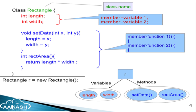How do we create an object of this class? The syntax is: Rectangle r = new Rectangle(). Using this statement I can create the object of Rectangle, and I can access the variables as well as the methods using the object r.